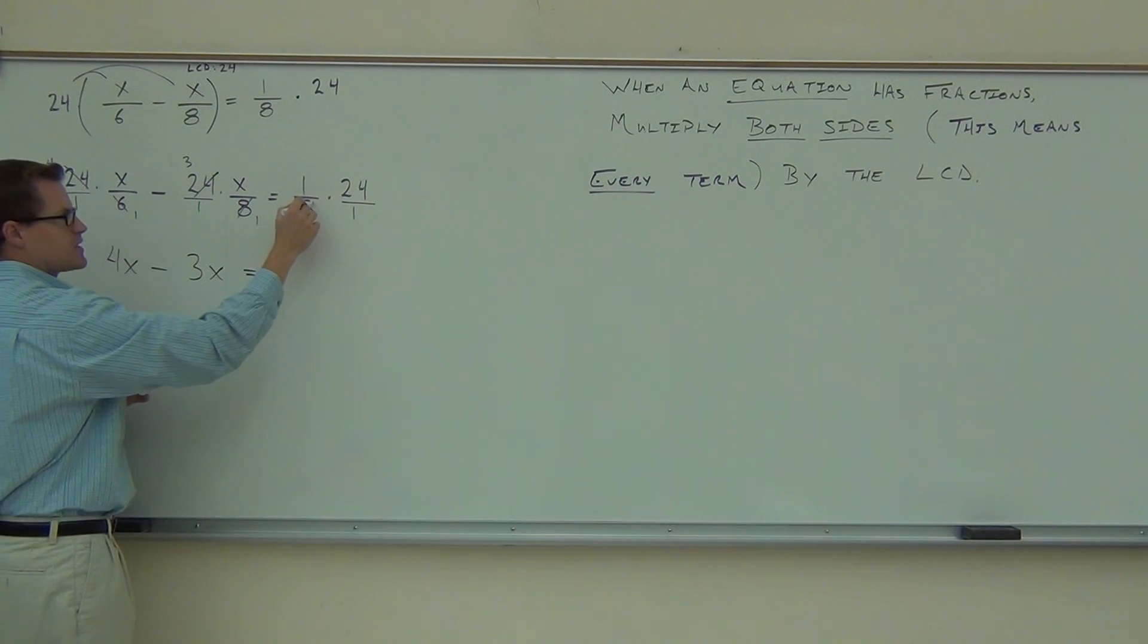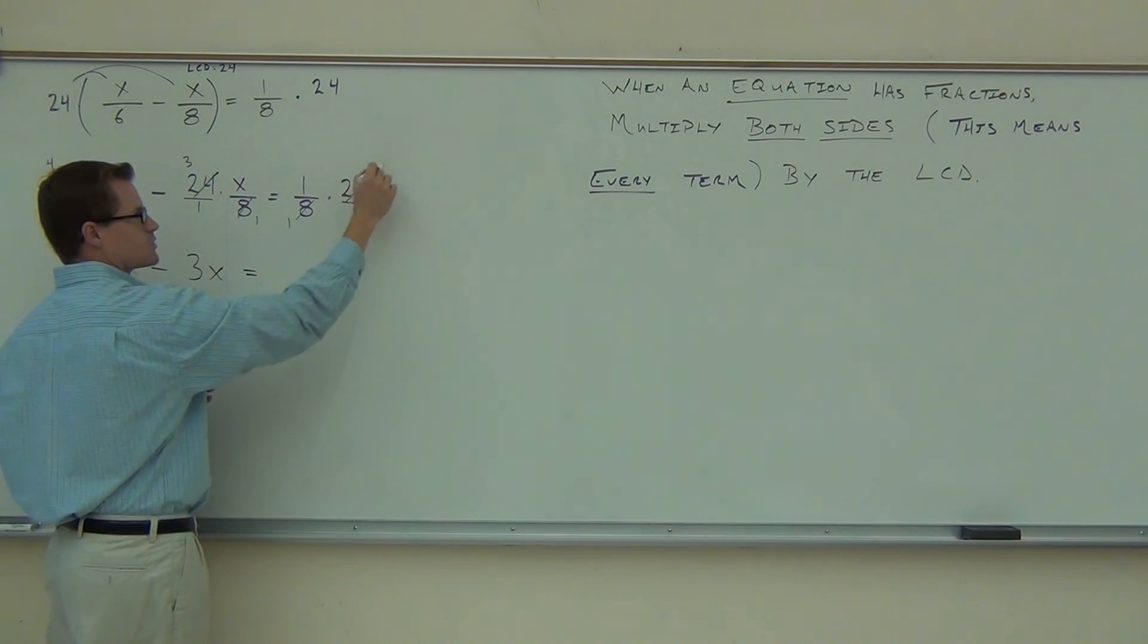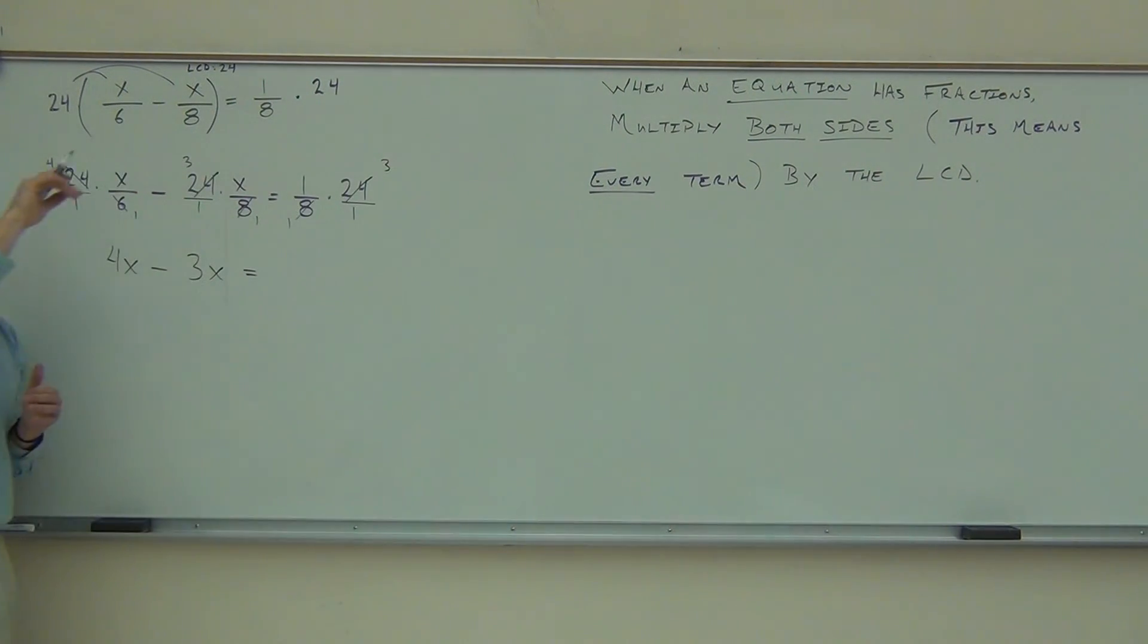Minus, does the same thing happen here? Yes. 8 goes into 8, one time, 24, 3. We have the minus sign that carries down. We have 3x. And then on the right-hand side, same thing happens. 8 goes into 8 once, into 24 three times. What do we get on the right-hand side of our equation? 3. Does this look easier than that? Yes. Now, it took us quite a long time to actually do this because I was talking through it, but that's pretty quick. I mean, you just find the LCD, you multiply every term, it does cancel out because it has to, and then we have a very basic equation with absolutely no fractions whatsoever.